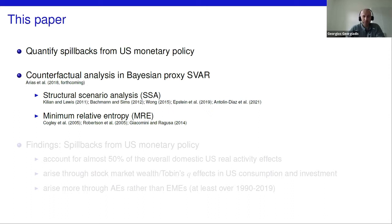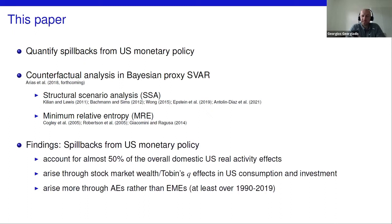Despite these quotes suggesting substantial work on spillbacks, when you actually go to the literature you don't find any papers quantifying them. So we attempt to fill that gap using counterfactual analysis in Bayesian proxy structural VAR models, specifically structural scenario analysis and minimum relative entropy methods. We have three main findings: first, spillbacks from U.S. monetary policy are large — about half of the overall domestic output effect of U.S. monetary policy can be accounted for by spillbacks.